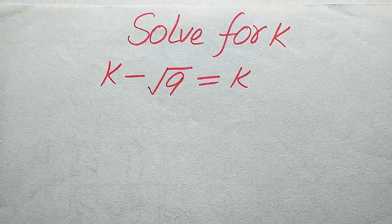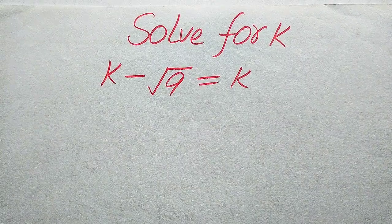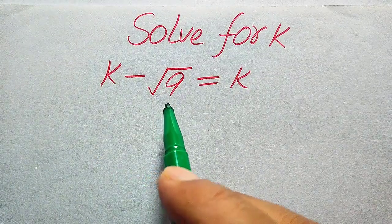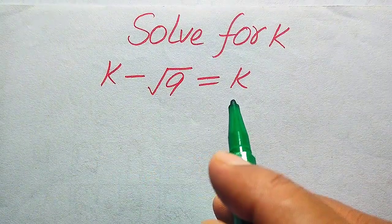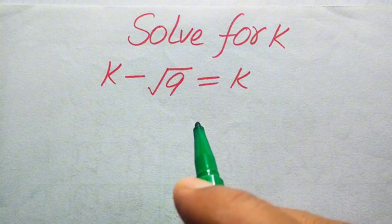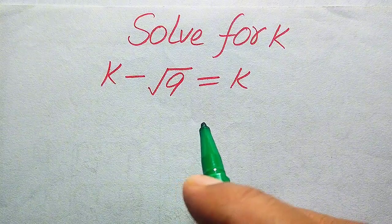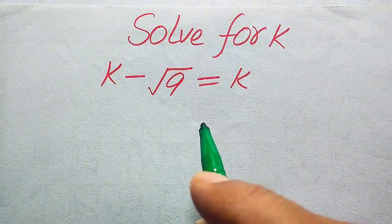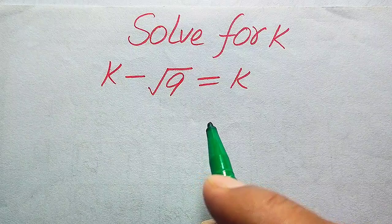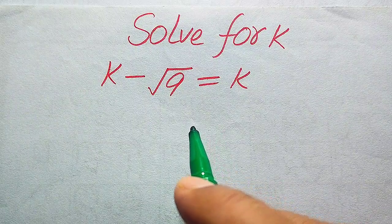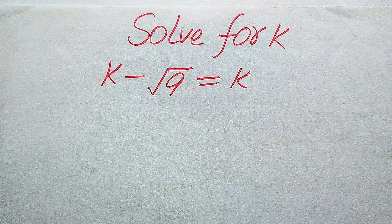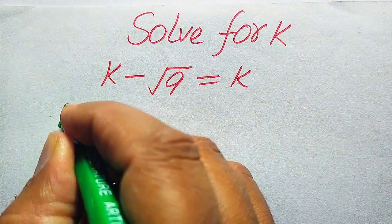Hello everyone. How to solve this problem for the values of k, if we have k minus square root of 9 equals k. We solve this problem for all the values of k. First we need to find all the roots of this equation, and at the last we will verify which of the roots are solutions and which are extraneous roots. We will solve this problem using two methods.